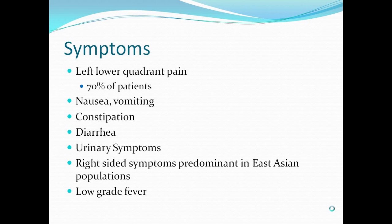70% of patients will have left lower quadrant pain. There's also nausea, vomiting, constipation, diarrhea, and urinary symptoms. Right-sided symptoms are predominant in East Asian populations, up to 70% of those cases. Patients will often have a low-grade fever.